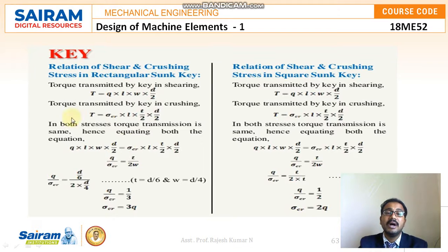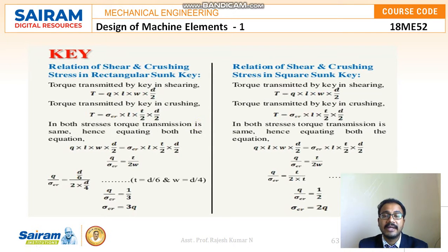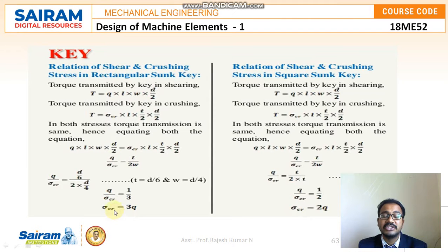One common connectivity you can see in both the rectangular key and square sunk key is the shear-crushing relationship. For the rectangular sunk key, the crushing stress equals 3 times the shear stress, and for the square sunk key it equals 2 times the shear stress.